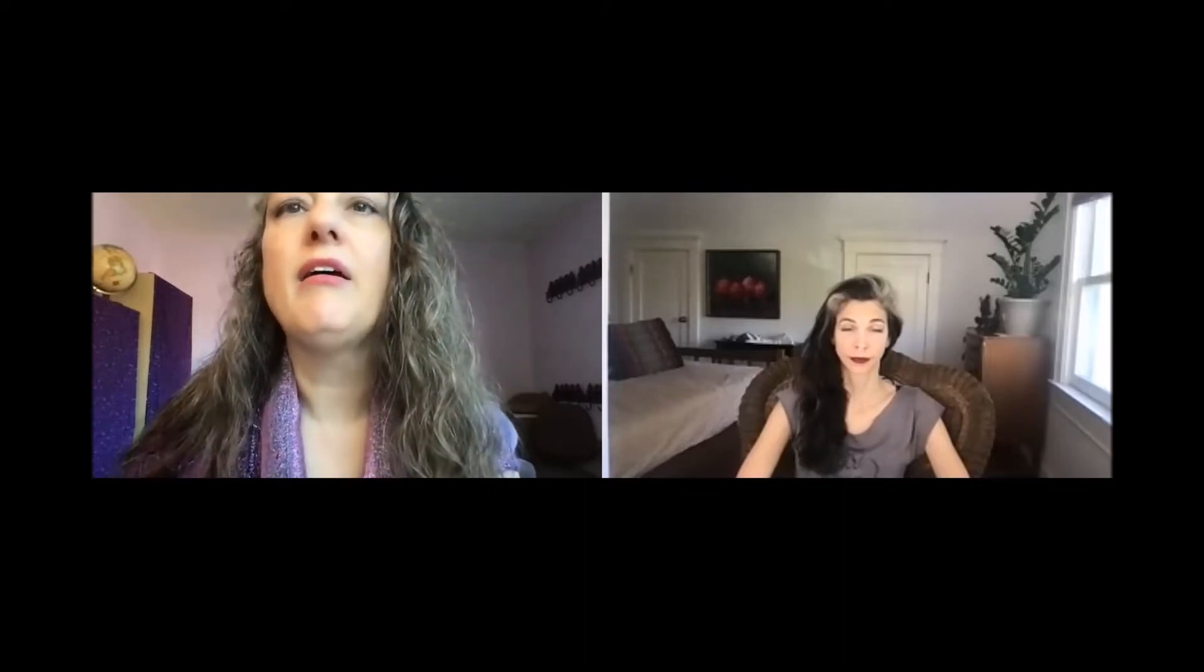We're here to tell you about the solar eclipse in Sagittarius happening here in early December 2021, which we're calling Heal Breaches by How You Act on Your Beliefs.